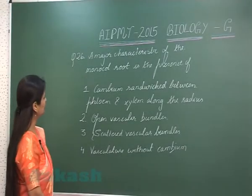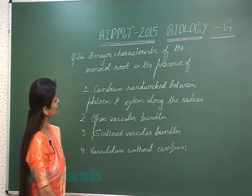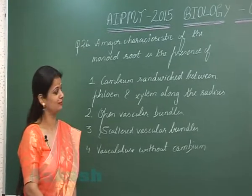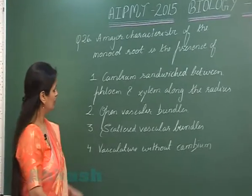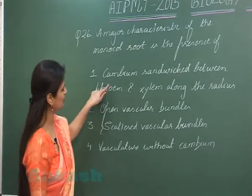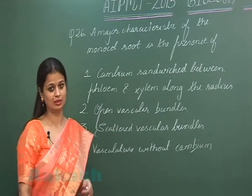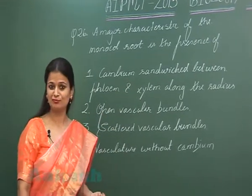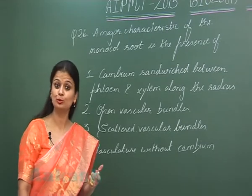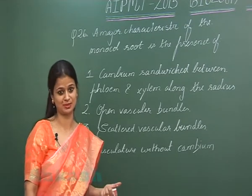Question number 26: a major characteristic of monocot root is the presence of — now the first option is cambium sandwiched between xylem and phloem. In the case of monocot root, cambium is absent. In monocots, cambium is absent.